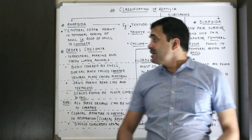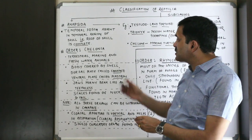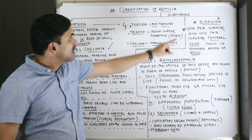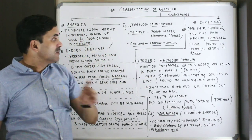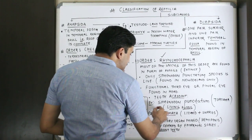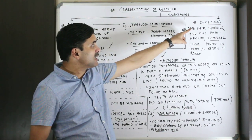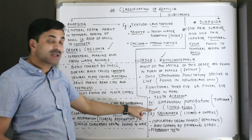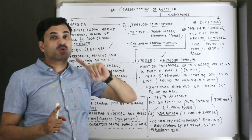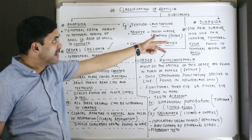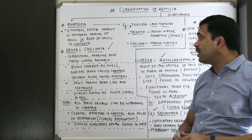For further classification: the subclass Anapsida is classified into one order called Order Chelonia. The subclass Diapsida is divided into three major orders: Order Rhynchocephalia, Order Squamata, and Order Crocodilia. Squamata is the largest order — remember that. So Diapsida has three orders and Anapsida has one order, which is Chelonia.